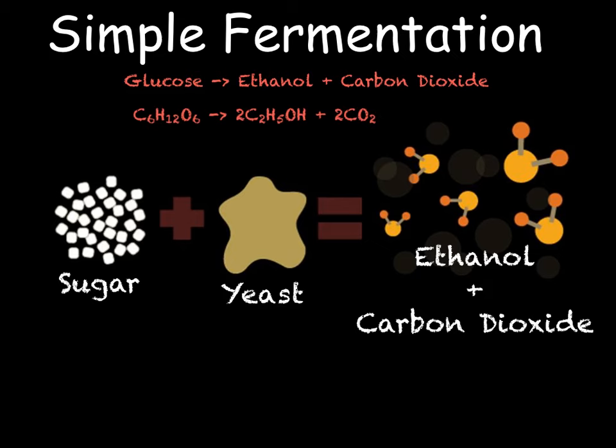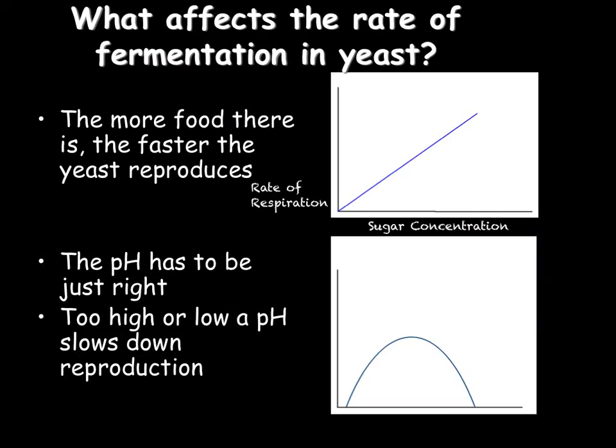The symbol equation is C₆H₁₂O₆ → 2C₂H₅OH + 2CO₂. If we increase the concentration of sugar — the amount of food — then the yeast will reproduce faster, so the number of yeast will go up, which will increase the rate of respiration and therefore the rate of fermentation. The pH has to be just right; too high or too low a pH will slow down reproduction, so the rate of respiration and the rate of fermentation will decrease.